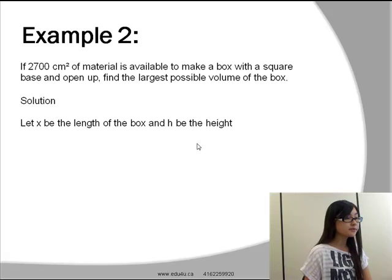Let x be the length of the box and h be the height. Since it's square, the length and the width of the bottom of the box will be the same, and they will both be x.